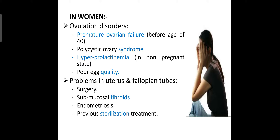In women, the first cause of infertility is ovulation disorder, such as premature ovarian failure before age 40. Another common cause is polycystic ovary syndrome (PCOS) — cysts in the ovary. Hyperprolactinemia in the non-pregnant state, where elevated prolactin hormone causes infertility, and poor egg quality are also causes. Problems in the uterus and fallopian tubes include any surgery in those areas, submucosal fibroids, endometriosis, or previous sterilization treatment.